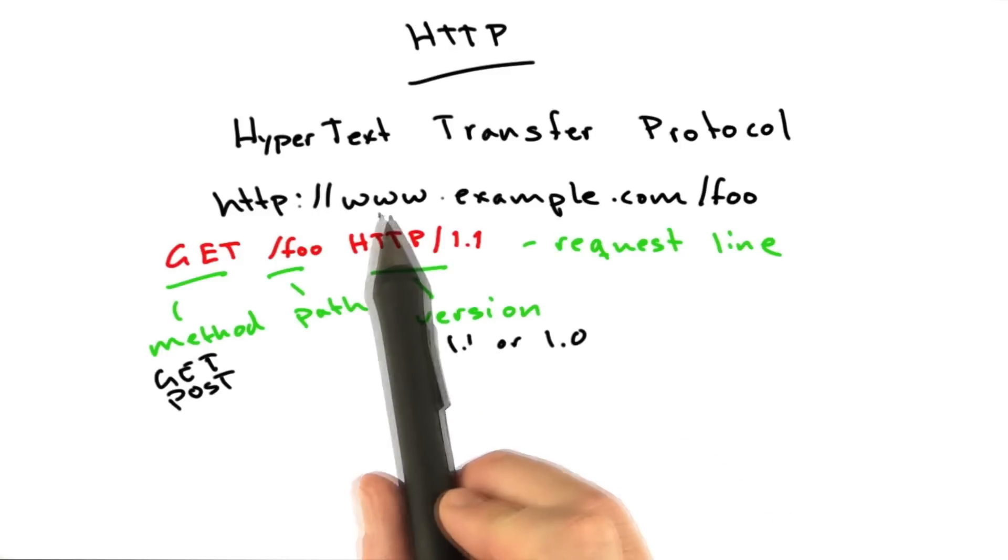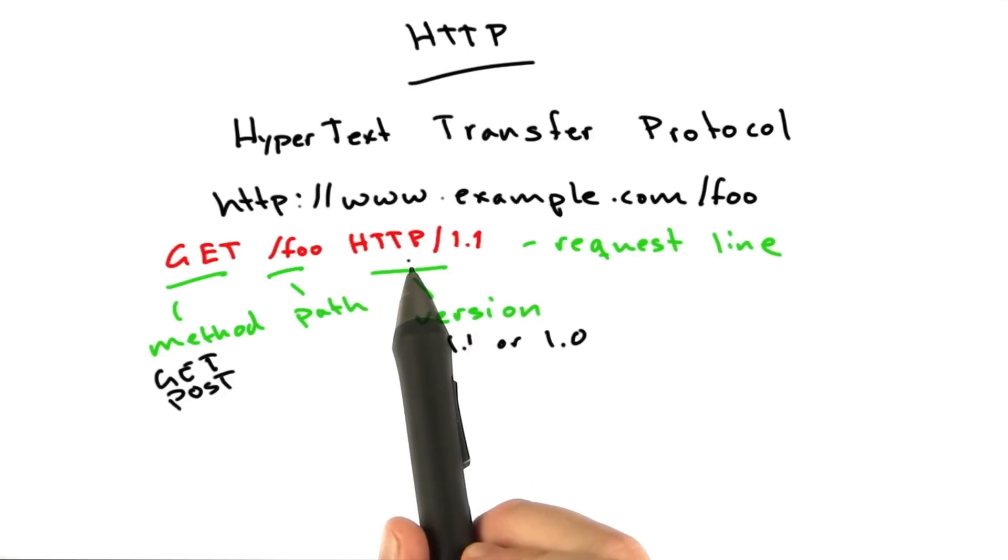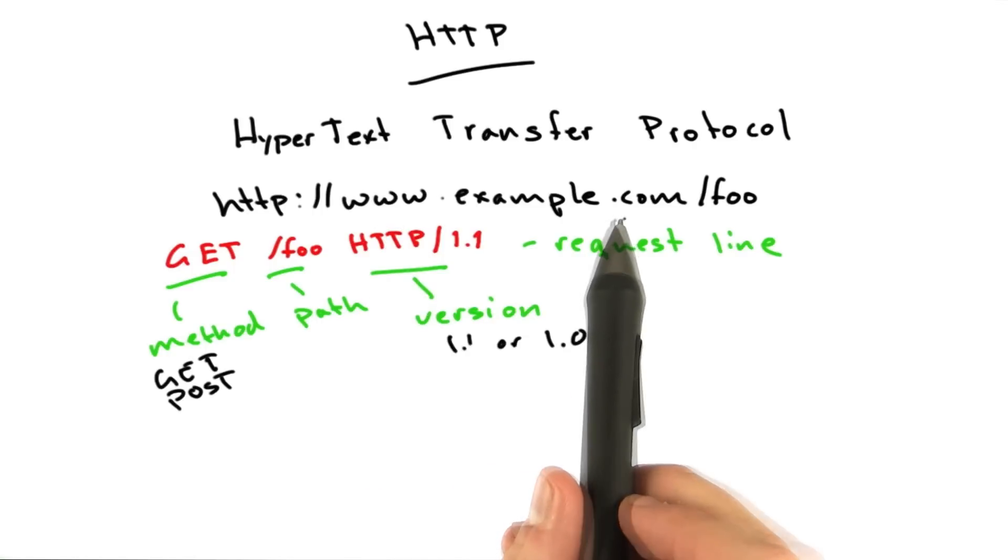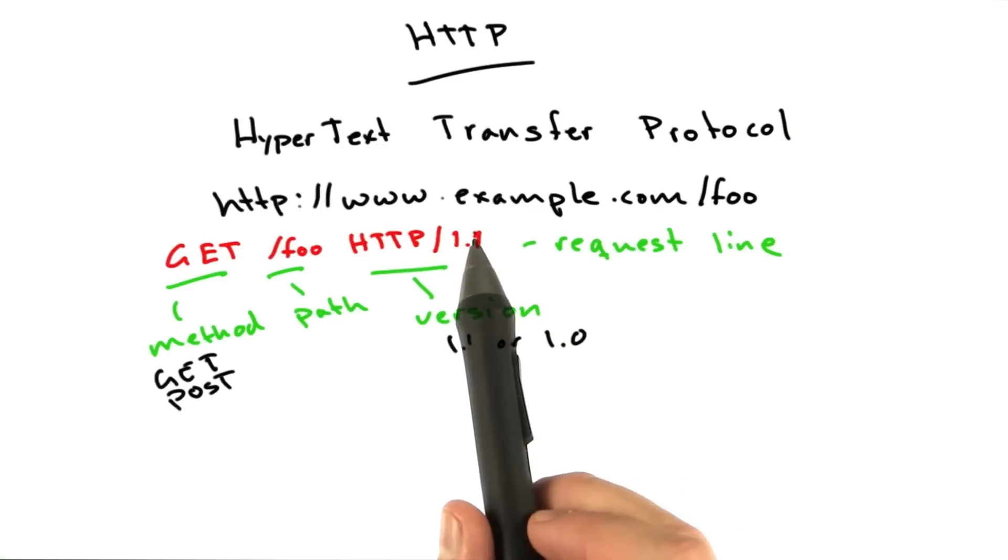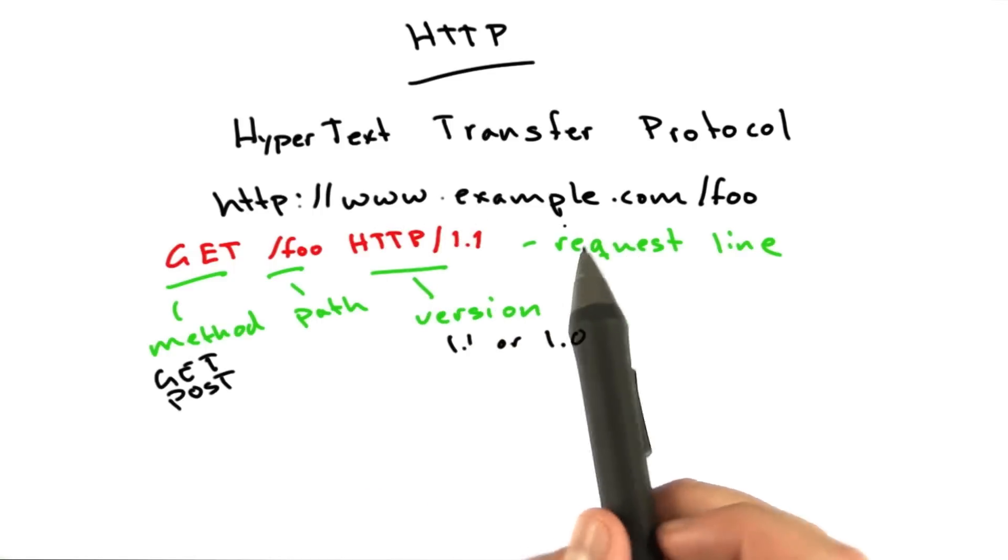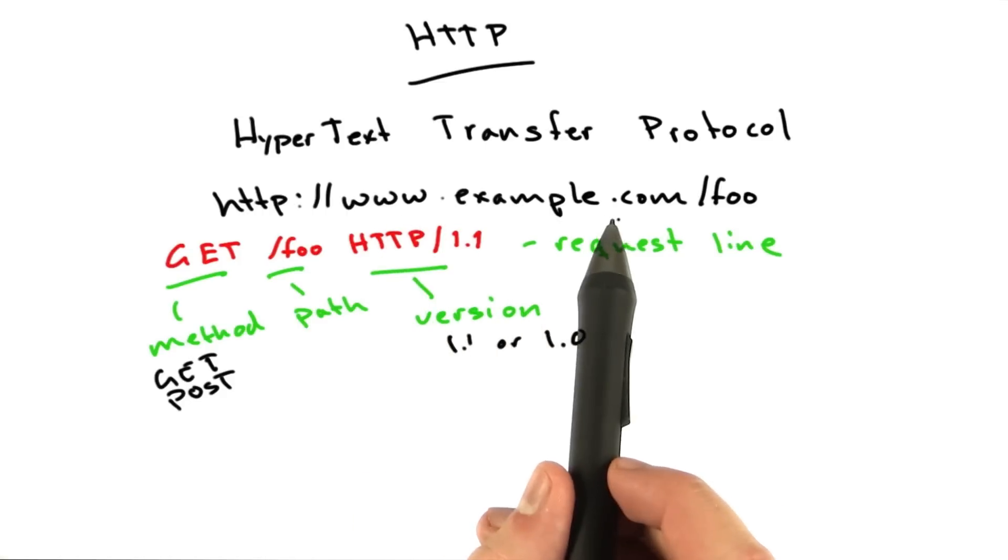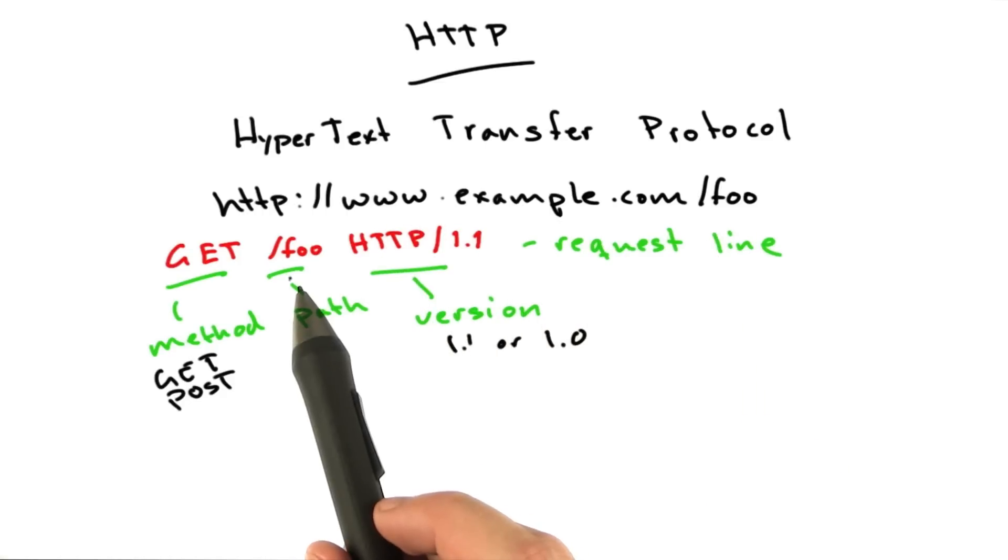Now, you're wondering where the host name is in this request line. It's not here. All that's here is the path. We're connected to this host. Your browser connected to this host, or if we're playing around with HTTP, we made the connection. But that's how we know where we are. So this is used for making the connection, and the path is used for making the request.